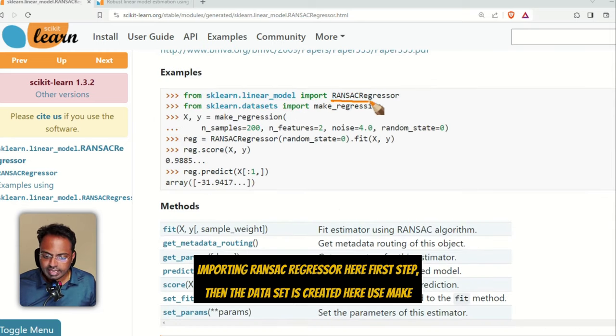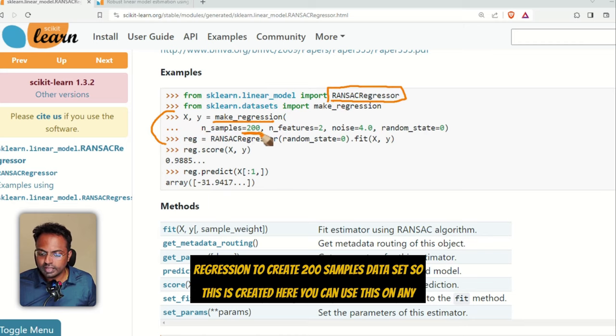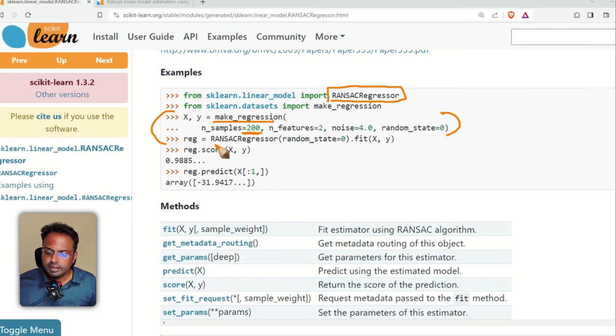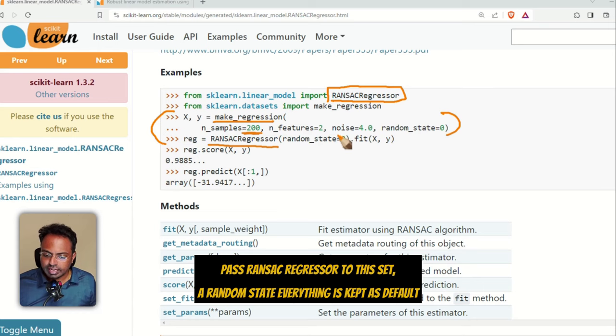We are importing RANSAC regressor here, first step. Then the dataset is created here. Use make_regression to create 200 samples dataset. So this is created here. You can use this on any of your real world dataset also. The process remains the same. Pass RANSAC regressor to this, set a random state. Everything is kept as default settings.